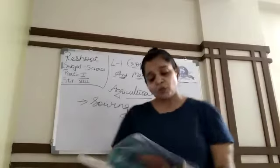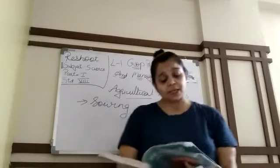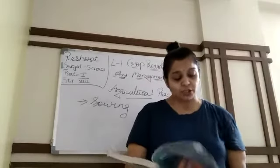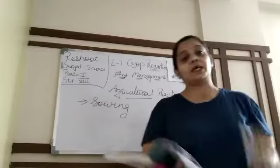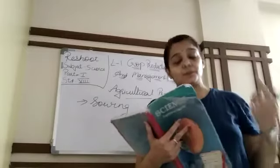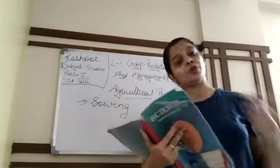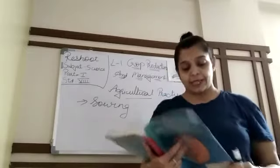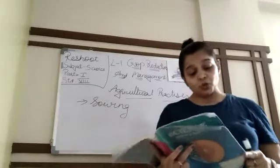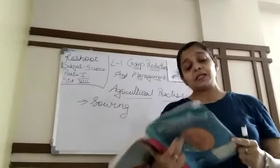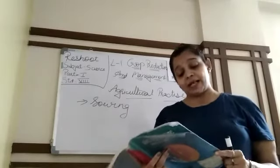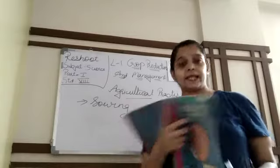Sowing is an important part of crop production. It is important because crop growth depends on it. Before sowing, good quality, clean and healthy seeds of good variety are selected.